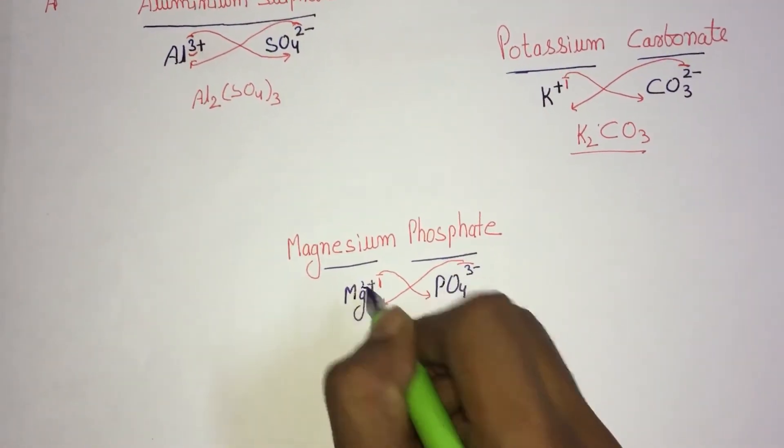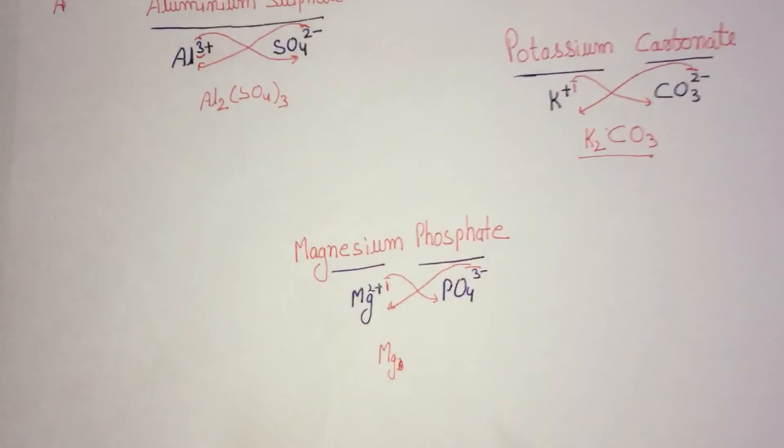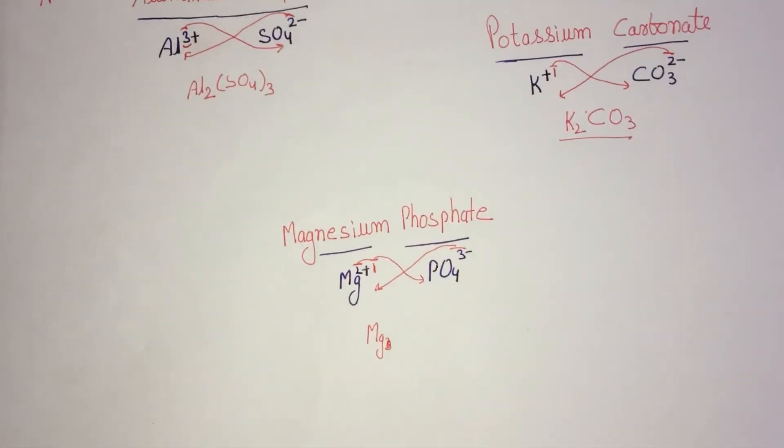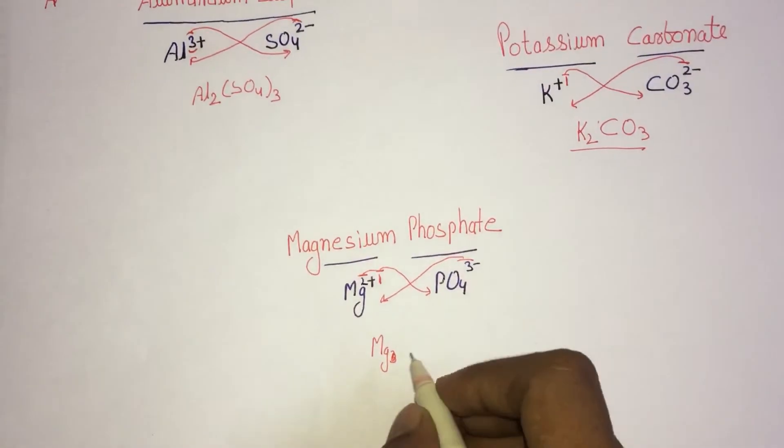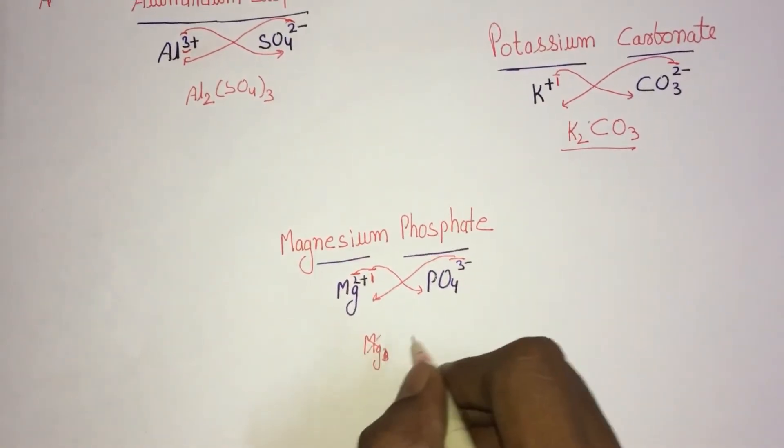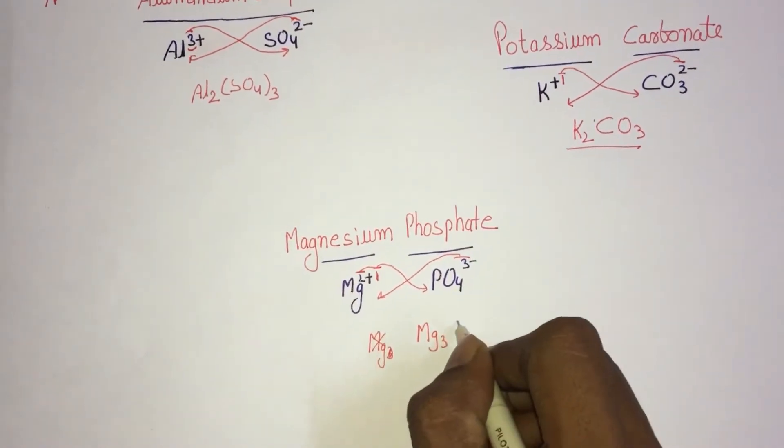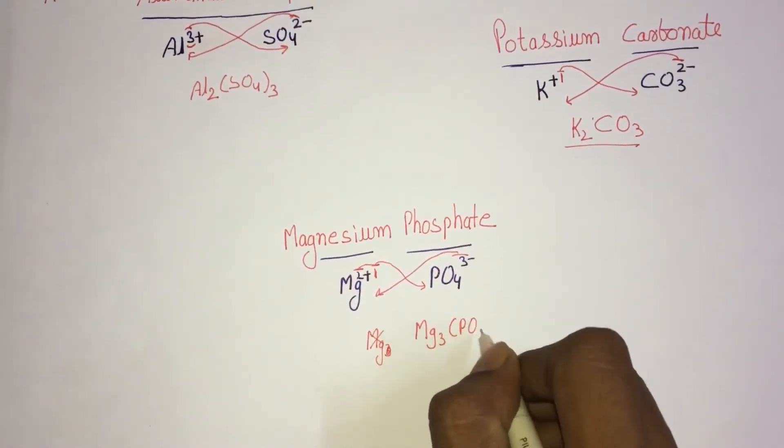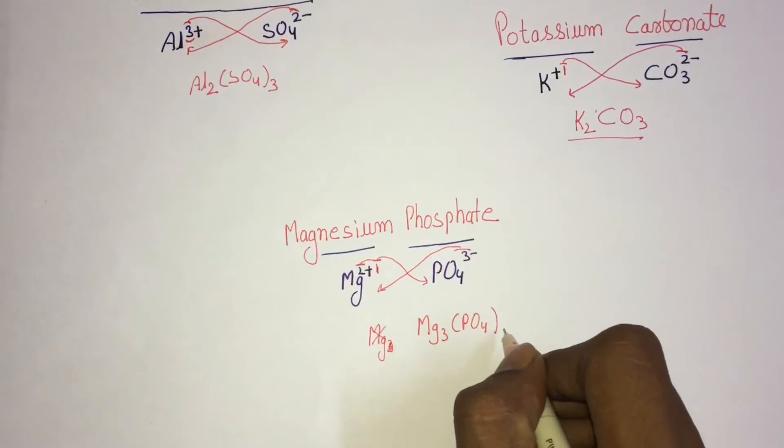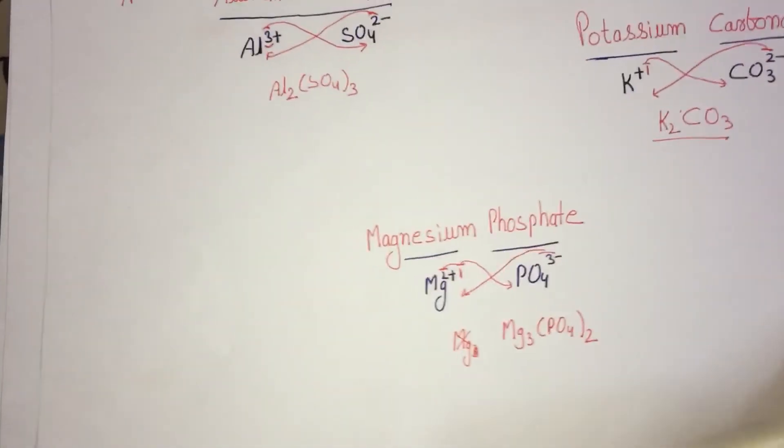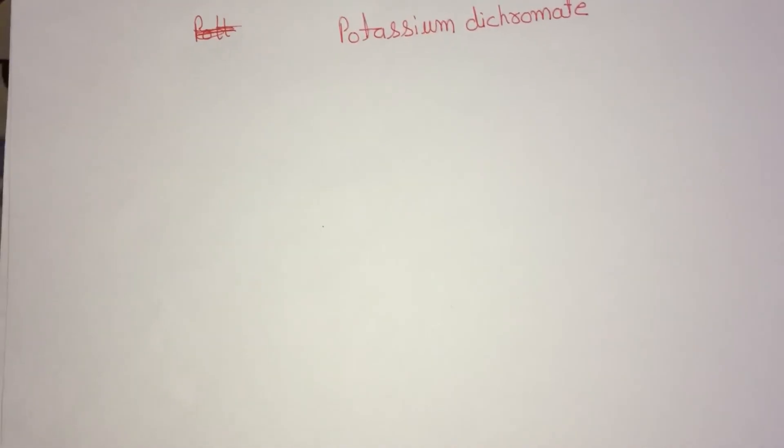So two goes to phosphate, three comes to magnesium, and the formula is Mg3(PO4)2, magnesium phosphate.